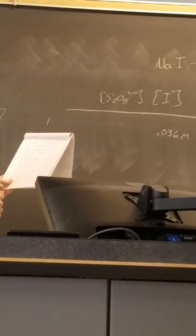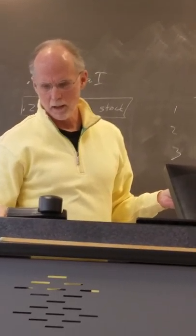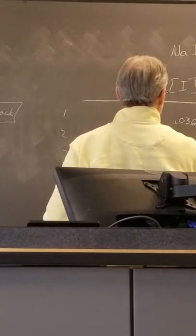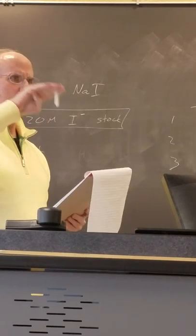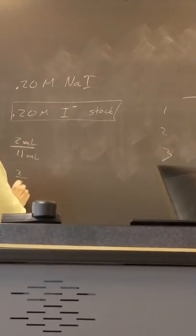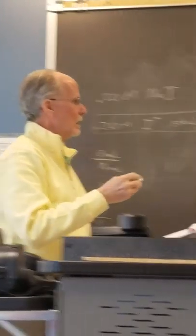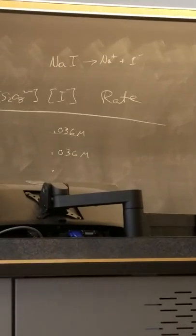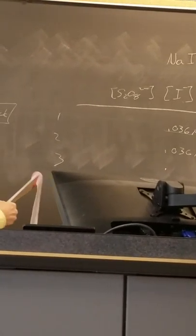On the second one, for the I-, you also had 2 milliliters, so 0.036 here. And on the third one, you had 4 milliliters. So it's 2 again. And on the last one, it was 4 in a total of 11. So that would be the diluted concentration here is going to be 2 times this, or 4 elevenths of the original.